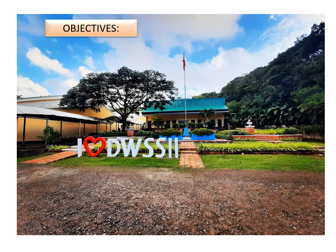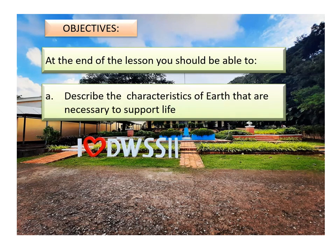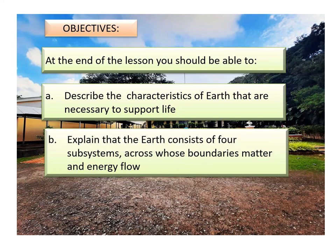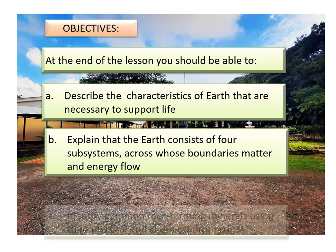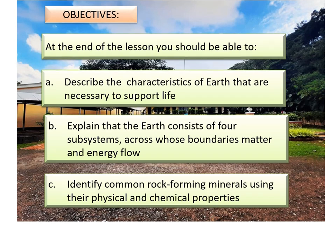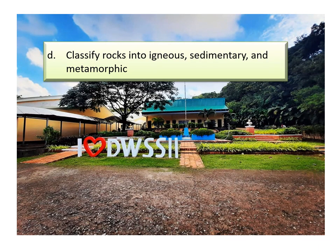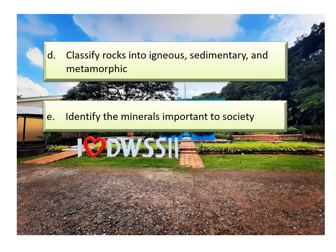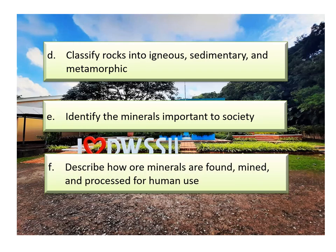Here are our objectives. As we navigate the lesson, you are expected to: describe the characteristics of Earth that are necessary to support life; explain that the Earth consists of four subsystems across whose boundaries matter and energy flow; identify common rock-forming minerals using their physical and chemical properties; classify rocks into igneous, sedimentary, and metamorphic; identify the minerals important to society; and describe how ore minerals are found, mined, and processed for human use.